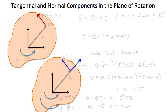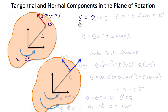Let's consider the tangent and normal components of the acceleration of a point in the plane normal to the axis of rotation that is rotating in circular motion about the origin. Our point is P with position vector r, and it has angular velocity omega, which is θ-dot times n, where n is a unit normal vector perpendicular to the plane. The velocity v equals omega cross r, and since omega is θ-dot, v equals θ-dot n cross r, and the magnitude of v equals r θ-dot, where r is the magnitude of the position vector r.